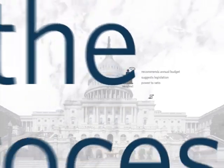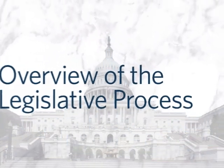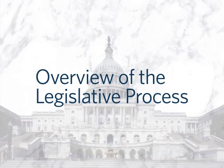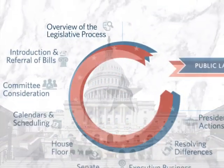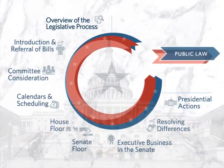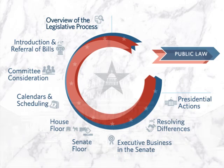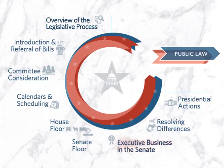The process by which a bill becomes law is rarely predictable and can vary significantly from bill to bill. In fact, for many bills, the process will not follow the sequence of congressional stages that are often understood to make up the legislative process. The presentations on specific topics that follow present a more detailed look at each of the common stages through which a bill may move, but keep in mind that complications and variations abound in practice.